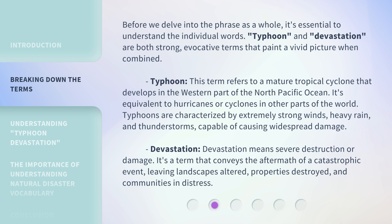Before we delve into the phrase as a whole, it's essential to understand the individual words. Typhoon and devastation are both strong, evocative terms that paint a vivid picture when combined. Typhoon refers to a mature tropical cyclone that develops in the western part of the North Pacific Ocean. It's equivalent to hurricanes or cyclones in other parts of the world. Typhoons are characterized by extremely strong winds, heavy rain, and thunderstorms, capable of causing widespread damage.